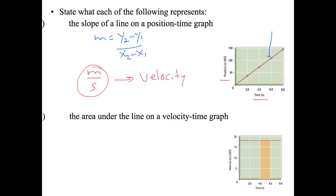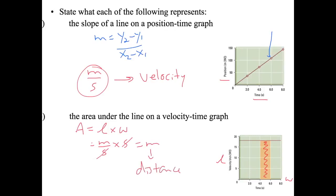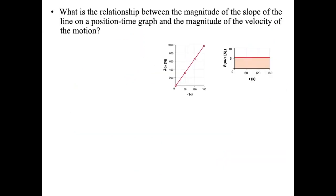What does the area under a line on a velocity-time graph represent? Area equals length times width. The length is represented by meters per second (velocity) and the width is represented by time in seconds. The seconds cancel, and you're left with meters. Therefore, the area under the line on a velocity-time graph represents distance.